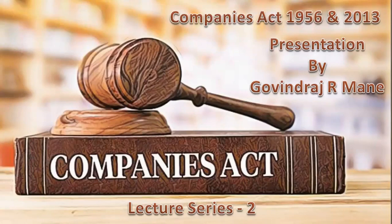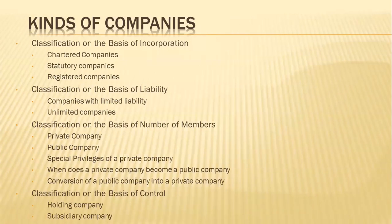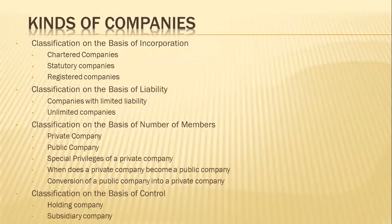Welcome students. Today we will learn — this is a second lecture on the Companies Act of 1956 and 2013. We will understand the various kinds of companies as per the Companies Act of 1956. These are some of the classifications listed: classification on the basis of incorporation, on the basis of liability, on the basis of number of members, and classification based on control.